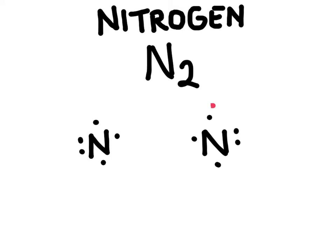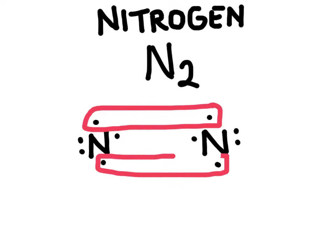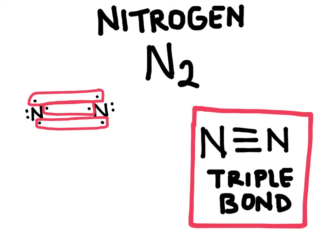And then we can start pairing up the unpaired electrons. So we'll pair up these two at the top, pair up these two at the bottom, and then we can also pair up these two in the middle, and so nitrogen is actually going to form what we call a triple bond. And so sometimes elements will even share three electrons in a bond.